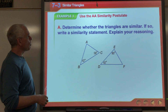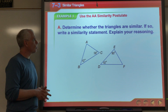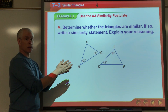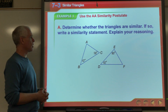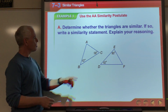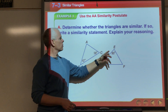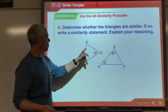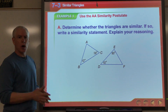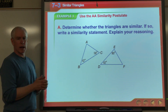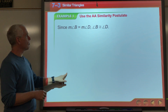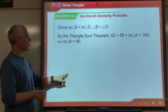So determine whether the triangles are similar. If so, write a similarity statement. I need to determine if I can show that two angles of one triangle are congruent to two of another. Clearly these 42-degree angles are the same, but the 58 and 80 aren't congruent — I don't know anything about the third angles. Recall that the three angles in a triangle have to add up to 180, so I can find those third angles.